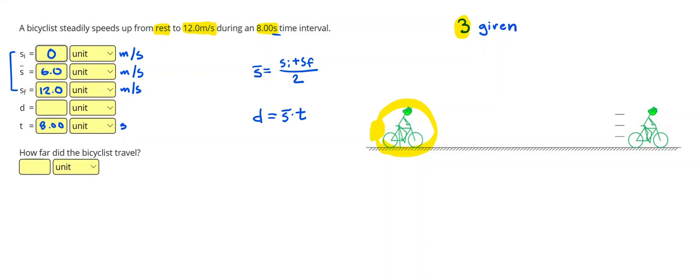So when we're calculating the distance, think about that this bicyclist would travel just as far as a different bicyclist that was moving with a constant speed of six meters per second. That's what the average speed tells us, and that's why this equation works. So if I do six times eight, I get 48, and my units on that are meters. When I multiply meters per second times seconds, the seconds cancel out, and I know that distance should be measured in meters.